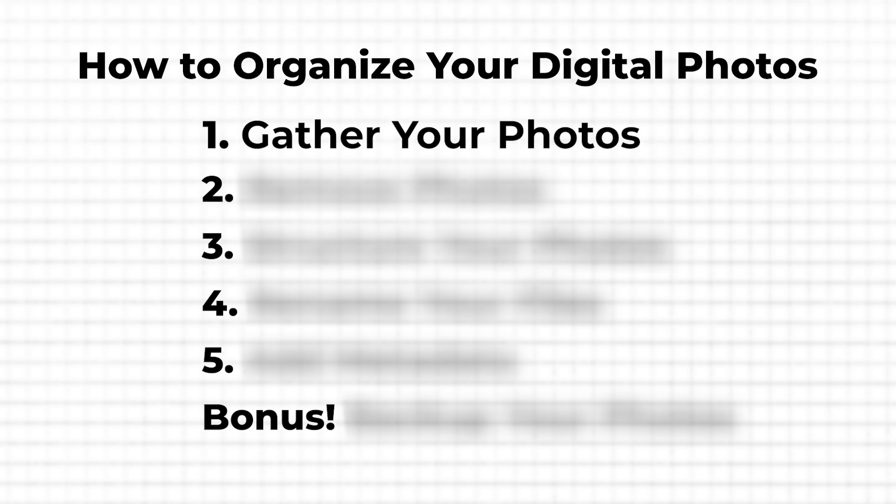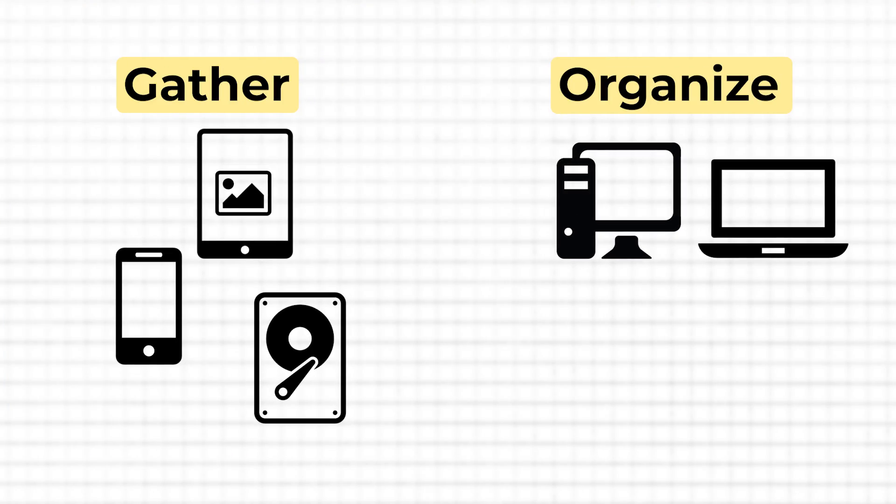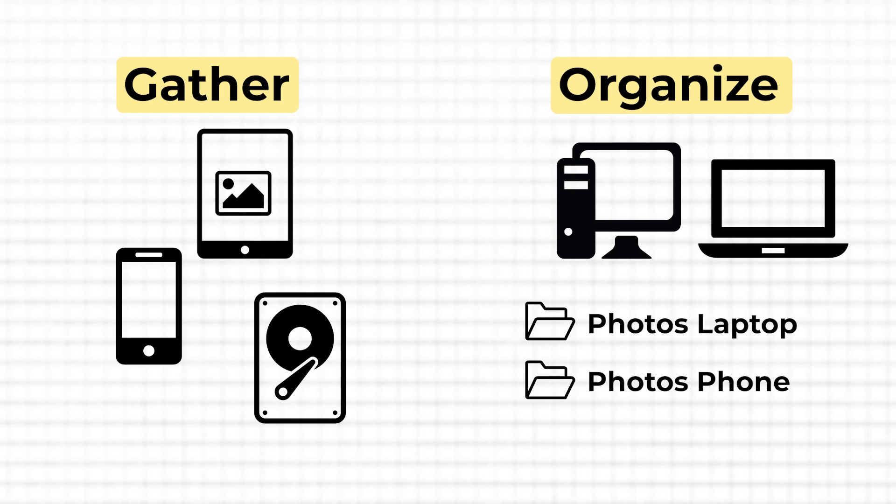The first thing you need to do is to gather all of your photos in one place. No matter how many photos you have and how scattered they are, to get a complete overview and do it right for once, they all need to be gathered. Ideally, the place to gather all your photos is on your laptop or computer, because there are just a lot more options than purely navigating on your phone. This doesn't mean the photos need to stay on your laptop, but for the organization exercise, it's best.